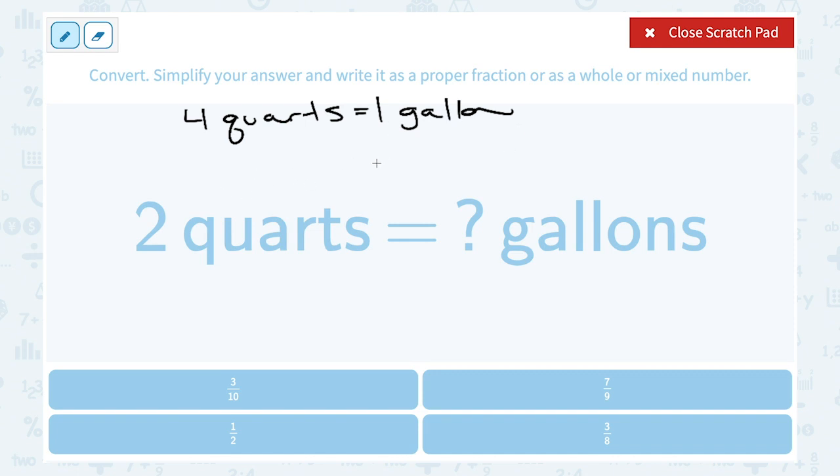So if we knew our number of gallons, we could multiply by four to get to our quarts. If we know our quarts, we're going to have to divide by four to get to our gallons. So another way to say it: we can think of this as two divided by four, or another way to think of that is as a fraction, right? That's the same thing as saying two divided by four or two over four.